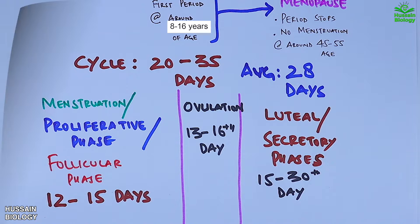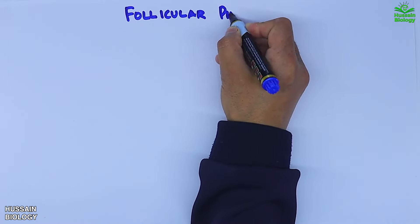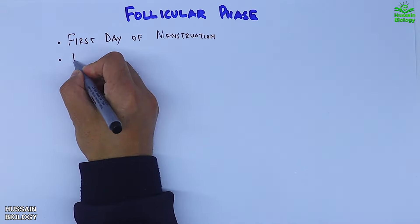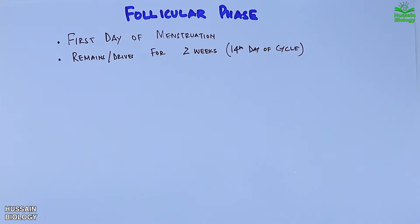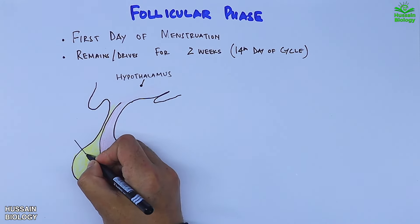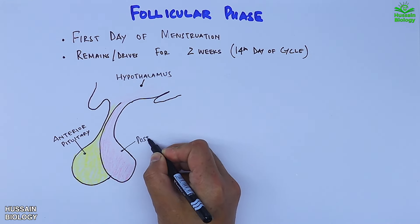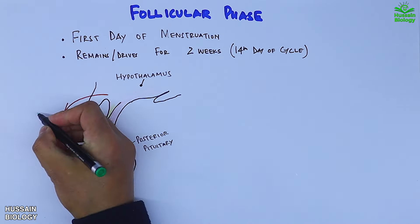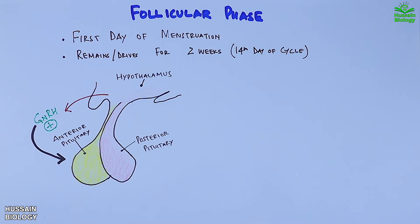The follicular phase marks the first day of menstruation and drives for the first two weeks of the cycle, up to ovulation. This phase is regulated by the hypothalamus-pituitary axis. The hypothalamus releases GnRH, which reaches the anterior pituitary and drives the release of FSH and LH. These hormones then target the ovaries and uterus.